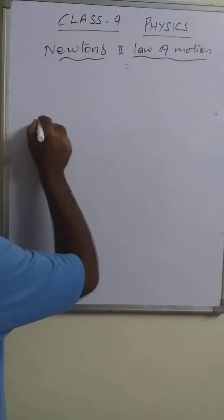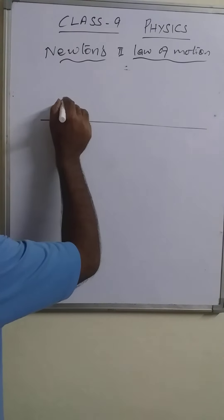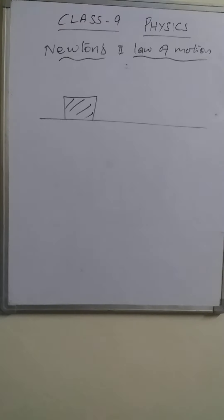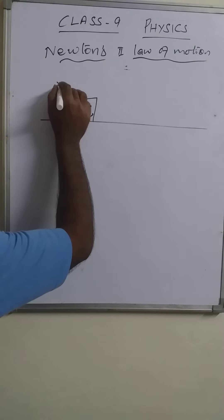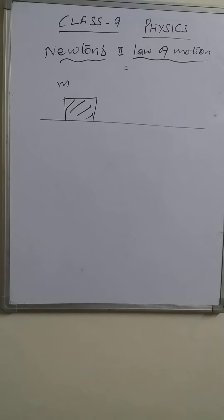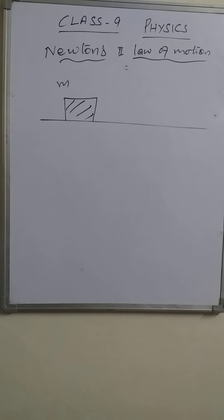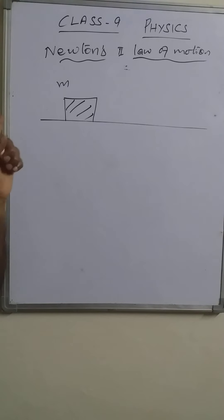Suppose this is a horizontal surface. This object has mass m, and it is placed at rest on the horizontal surface. To move the object, a force is required. That was discussed in Newton's first law of motion. The second law of motion tells us how much force is required — that is given by Newton's second law of motion.